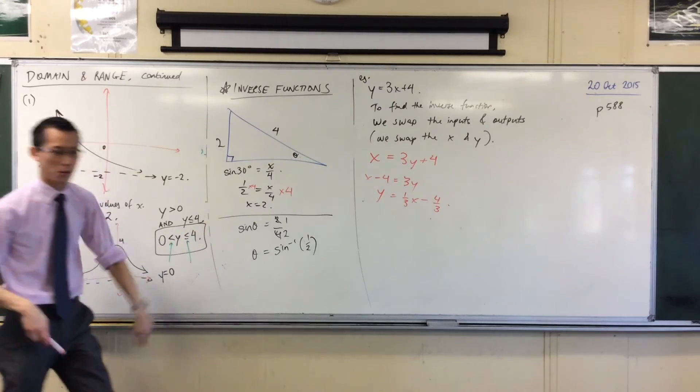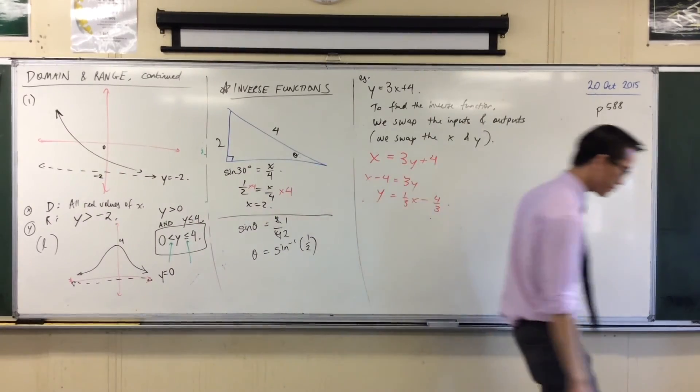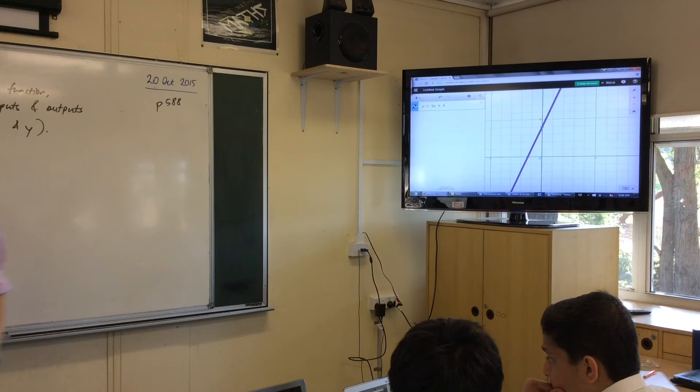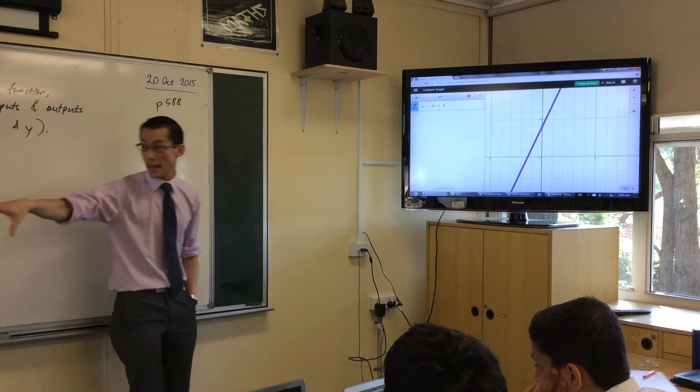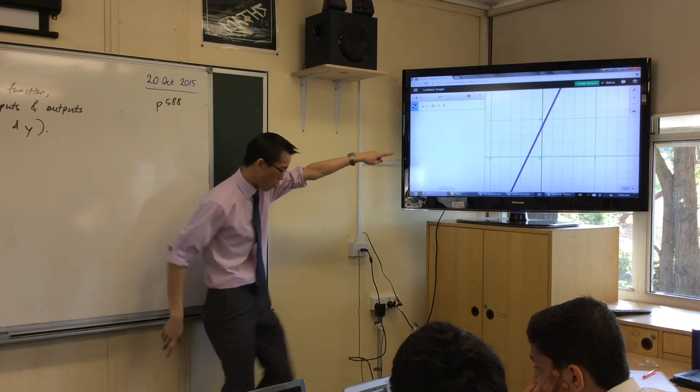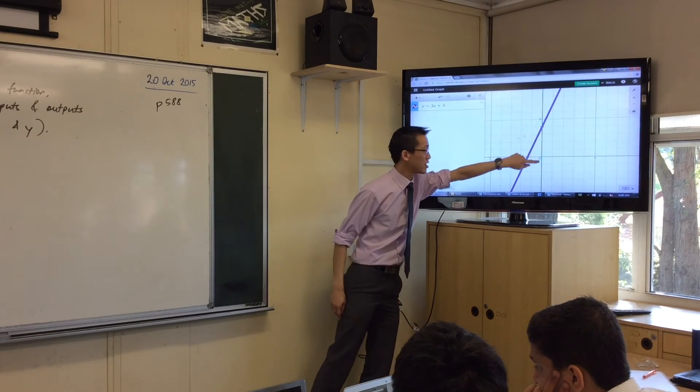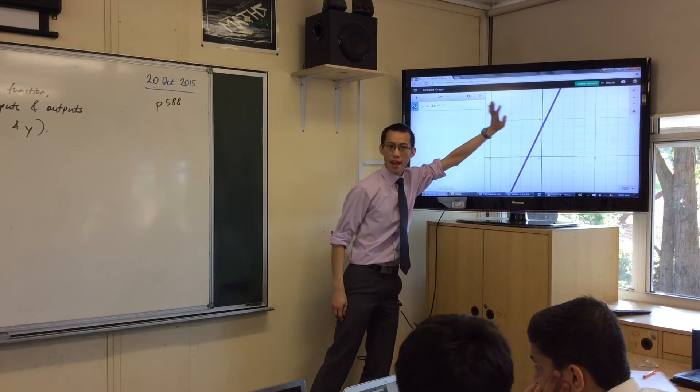Now, here's why I asked you to get your computer up. If you've gone there, before we go any further, does that match what you expected? The 3 tells you it's got a gradient of 3, so it's a pretty steep thing. And the plus 4 tells you - what does the plus 4 tell you? It tells you the y intercept, which is up there at 4, you can just see it there. I've got 0, 1, 2, 3, 4, 5.